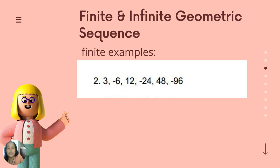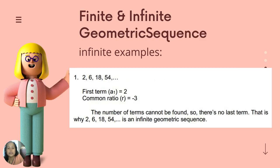Another example of a finite sequence is three, negative six, twelve, negative twenty-four, forty-eight, and ninety-six. An example of an infinite geometric sequence is two, six, eighteen, fifty-four — the first term is two and the common ratio is three. As you can see, there is no last term and the number of terms cannot be found, so two, six, eighteen, and fifty-four with continuing terms is an example of an infinite geometric sequence.